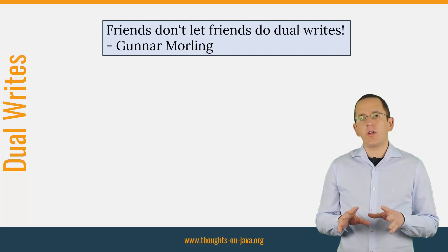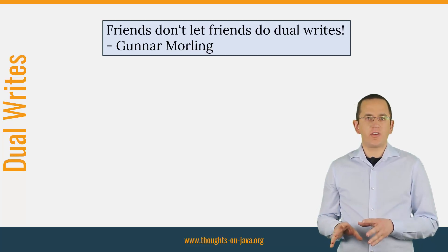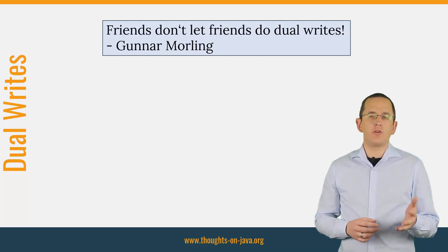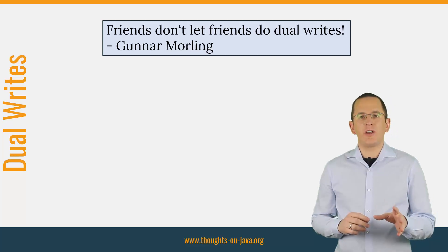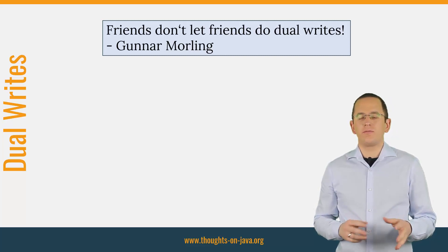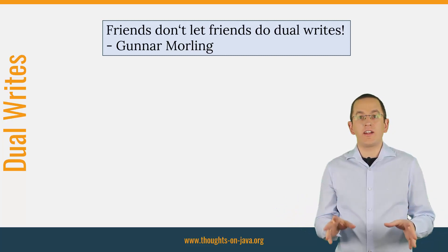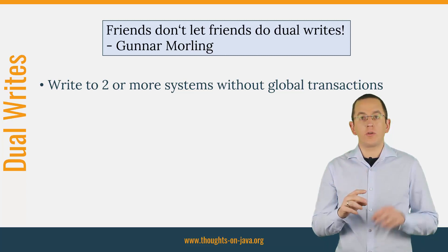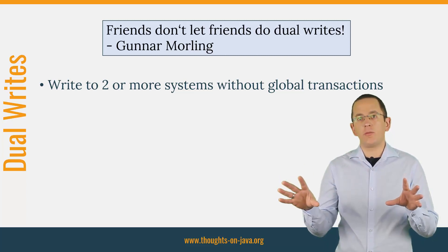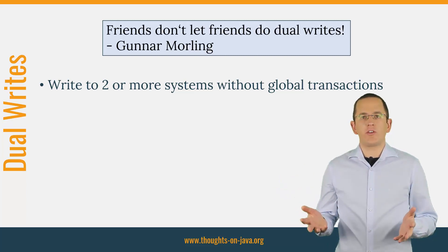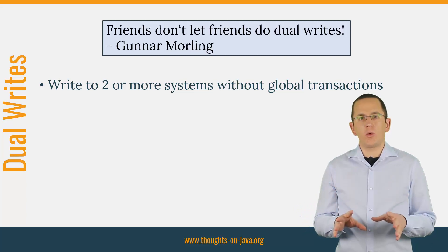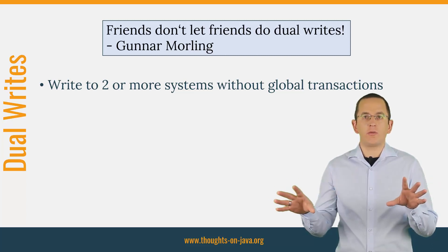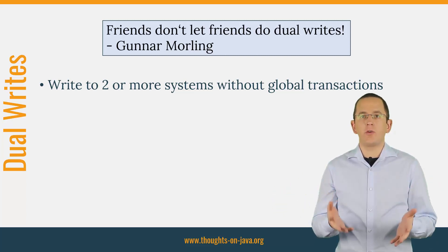After we talked about ACID transactions and eventual consistency, we also need to talk about dual writes. As Gunnar Molling always says, friends don't let friends do dual writes. A dual write is 2 write operations performed on 2 different external systems without a distributed transaction. This is the simplest way to update 2 external systems but also the most dangerous one.